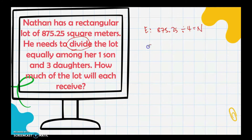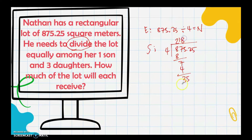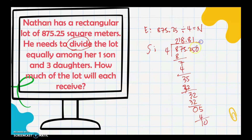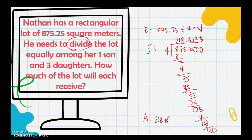To solve: 875.25 ÷ 4. We get 2, then 8, remainder 7; bring down 1 — that's 4, remainder 35; then 8, that's 32. Bring down 5, remainder 1. Add zeros and continue dividing until no remainder. The answer is 218.8125 square meters — each child will receive 218.8125 square meters of the lot.